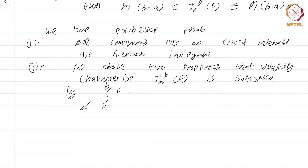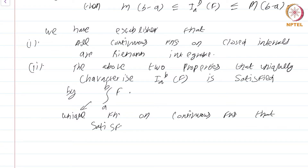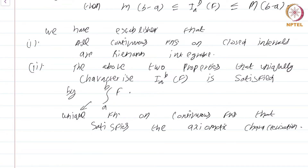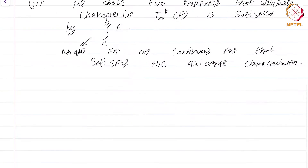That means this is the unique function on continuous functions that satisfies the axiomatic characterization. So the function i_{a,b} whose existence was up in the air is now on concrete ground. We have created the appropriate definitions that make i_{a,b} exist, and this existence is shown to be nothing but the Riemann integral that we have been studying.